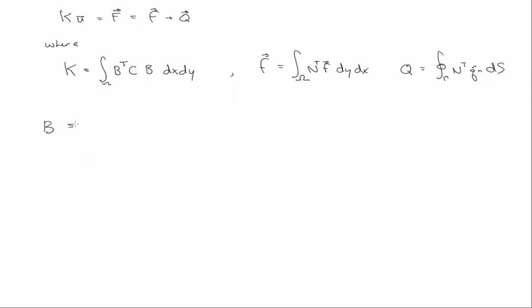And I introduced a new term there, B is equal to DN^T. So remember, D is the differential operator. So that's equal to N_1 with respect to x, using the comma notation for differentiation.